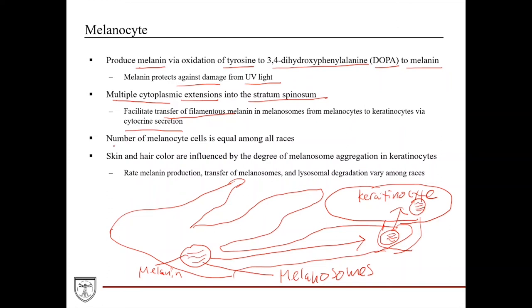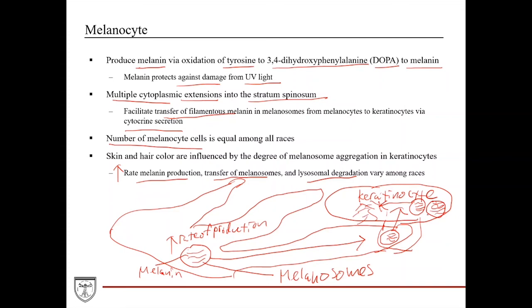As far as skin color goes, the number of melanocyte cells is equal among all races. What differs is multifactorial: first, the level of aggregation of melanosomes — a darker-skinned individual is going to have more melanosomes, higher concentration within the keratinocytes; second, a darker individual would also have a higher rate of melanin production; third, a higher rate of transfer of melanosomes. In lighter-skinned individuals, there is a higher rate of lysosomal degradation of melanosomes, meaning less melanin is available and pigment is not as dark. In darker-skinned individuals, this degradation rate is slower.